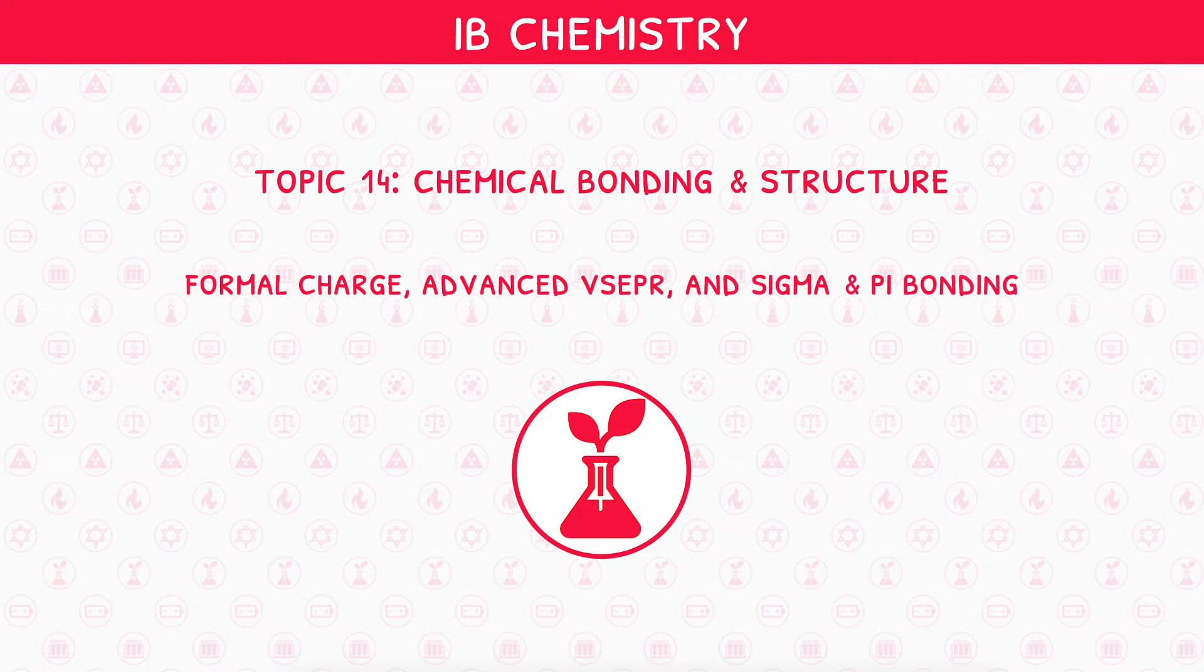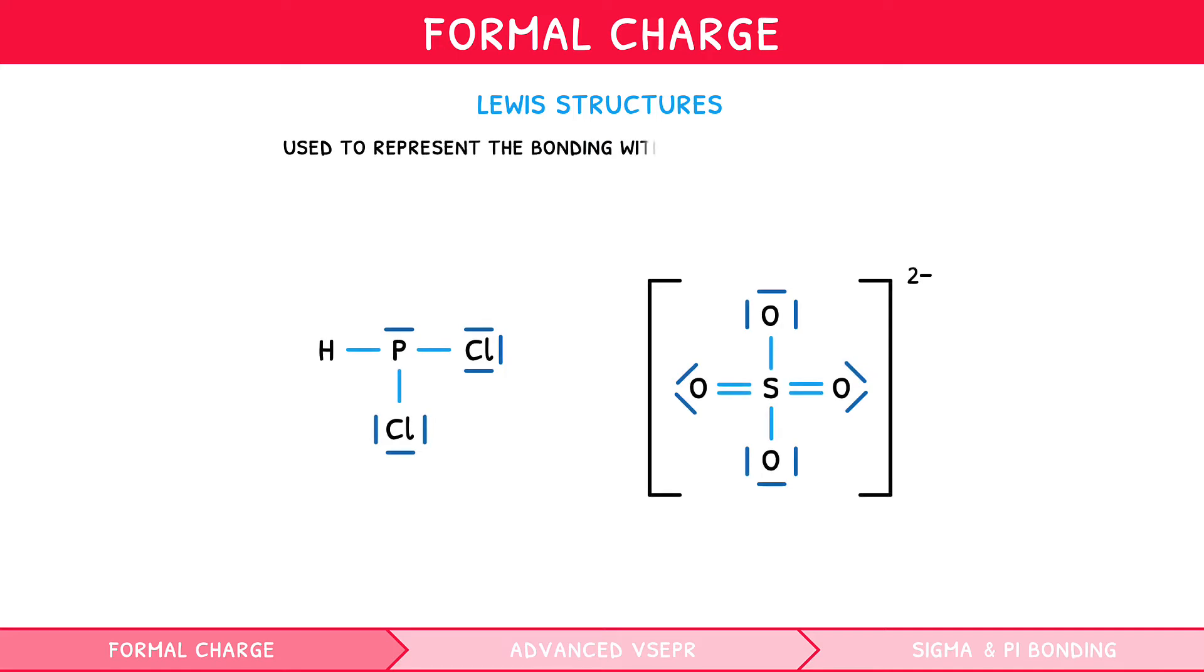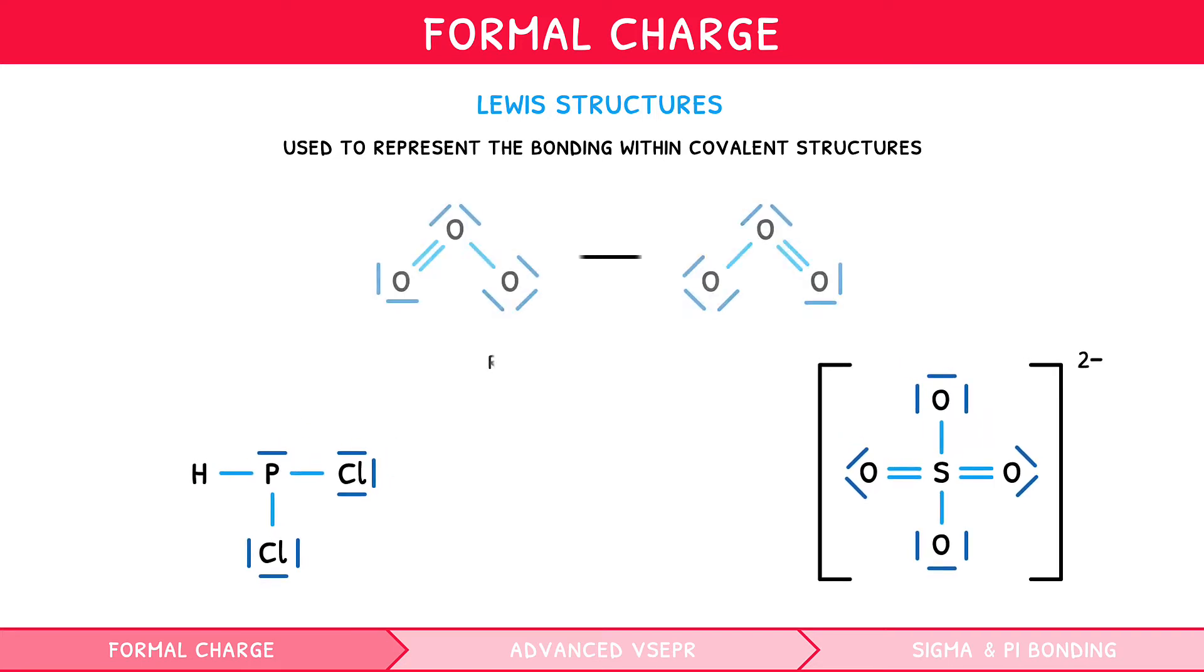Before starting, it is vital that you watch our previous two IB Chemistry Topic 4 videos, as they establish fundamental understanding required for the concepts introduced here. As mentioned in these videos, Lewis structures are used to represent the bonding within covalent structures. Following our process of drawing these perfectly, you should never have difficulty finding the correct final Lewis structure, except in the case of resonance structures.